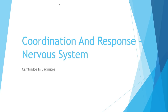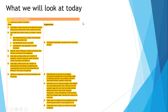Hey guys, welcome to another revision video on IGCSE Biology. Today we're starting on the topic Coordination and Response, and because it's a fairly large topic, we're going to break it up into different parts. So today we're looking specifically at the nervous system, and the syllabus content is as follows: 14.1 Nervous control in humans. So if you want to have a quick look at that, then we'll begin the video.